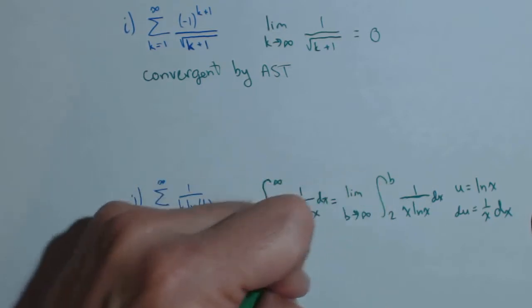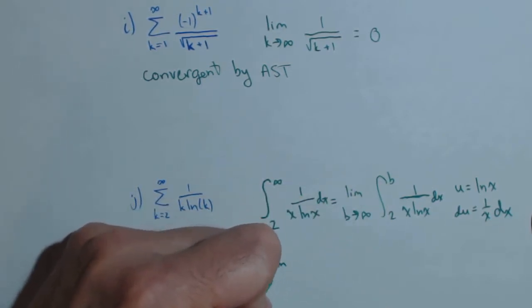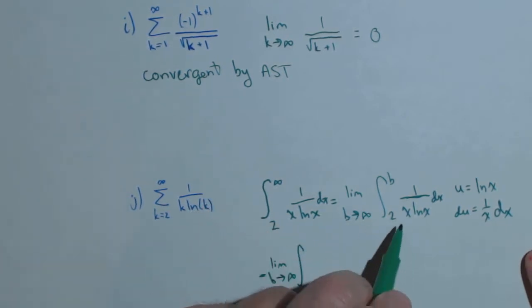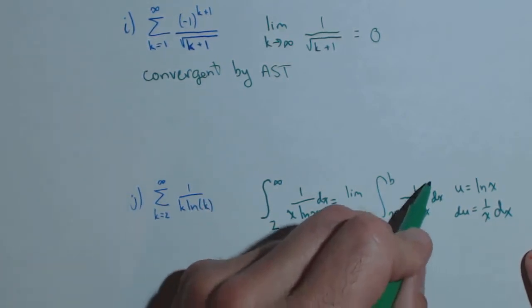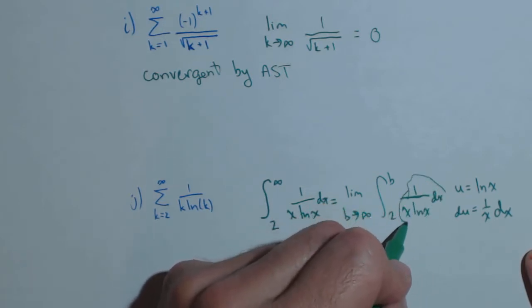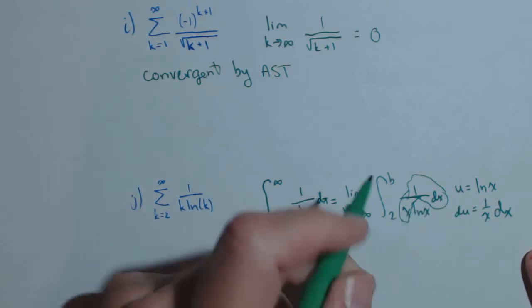Now, let's make that substitution really obvious. That's my u, and then this part here, ln of x is my u, and then this part, 1 over x dx is my du.